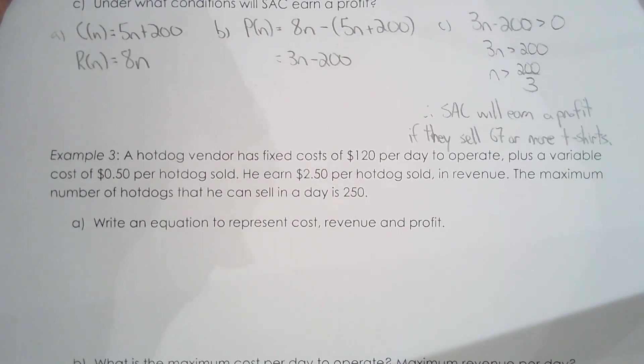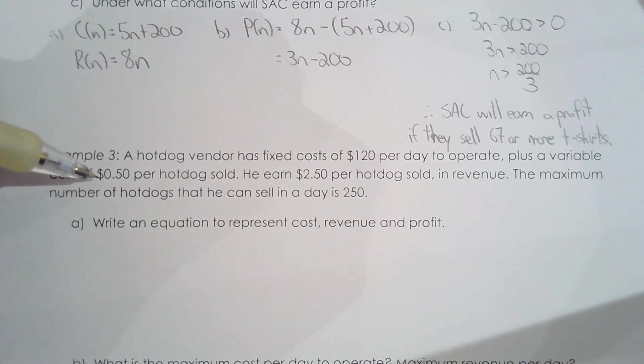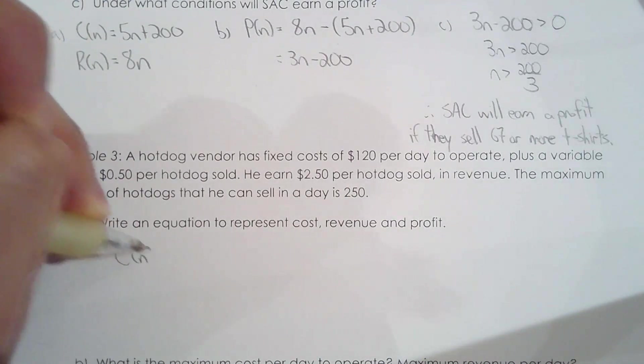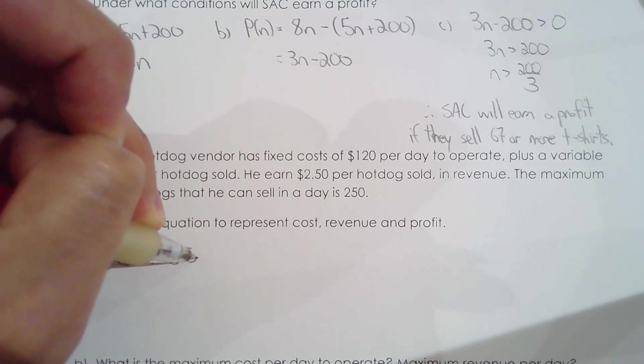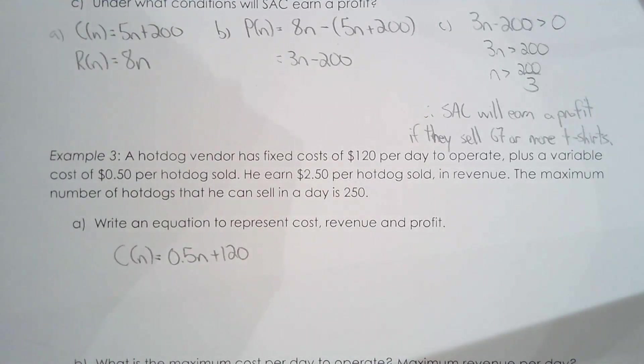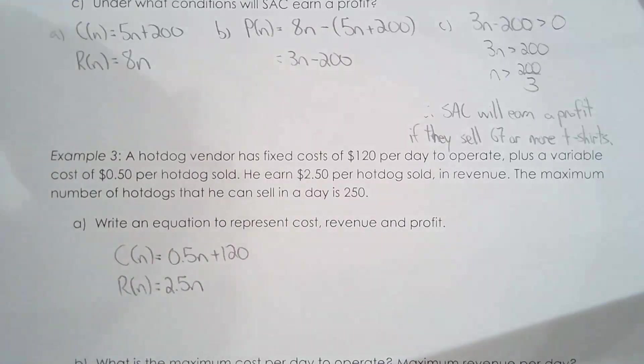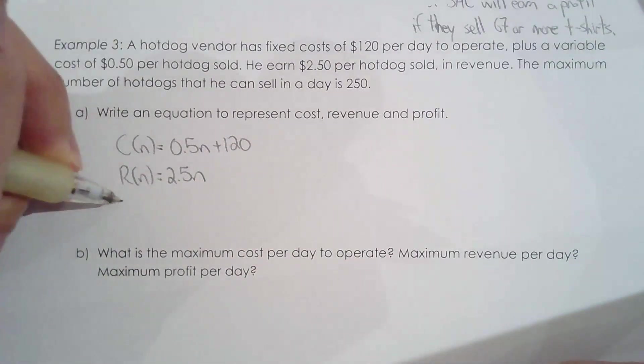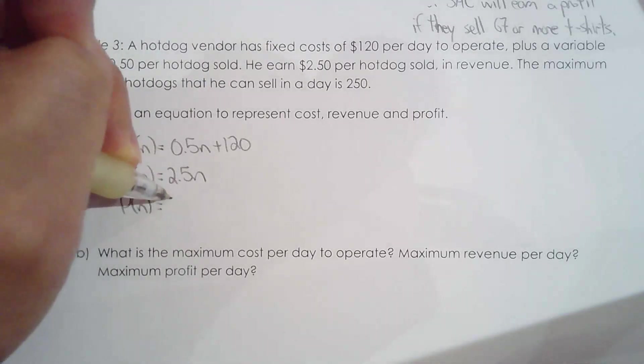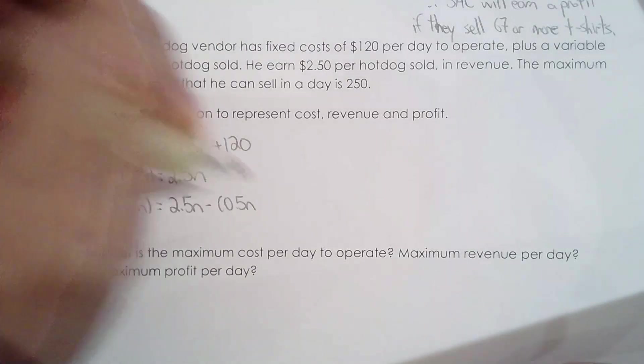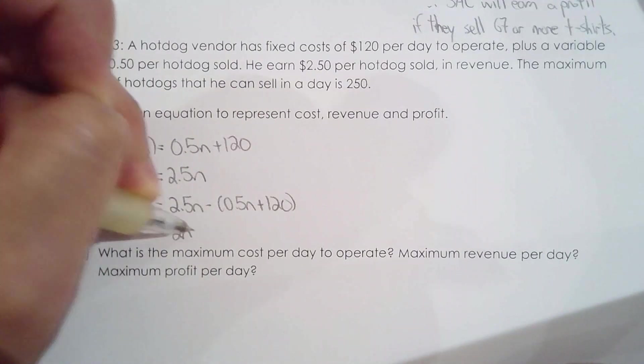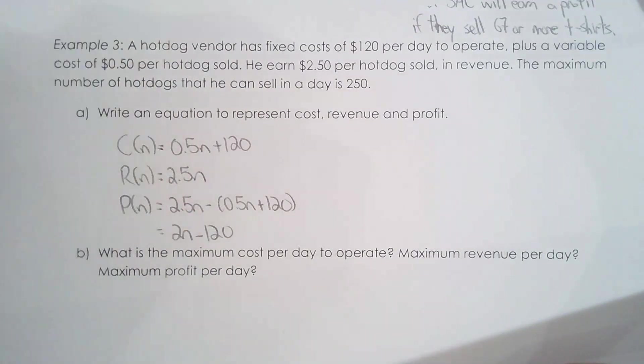A hot dog vendor has fixed costs of $120 per day to operate, plus a variable cost of $0.50 per hot dog sold. He earns $2.50 per hot dog sold in revenue. The maximum number of hot dogs that he can sell in a day is 250. Write an equation to represent costs, revenue, and profit. Let's take costs first: C of N is $0.50 a hot dog plus a flat $120 for the day, that's the fixed cost. The revenue is pretty simple: he sells a hot dog for $2.50. Now, the profit is a difference: 2.5N minus 0.5N plus 120, which is 2N minus 120.